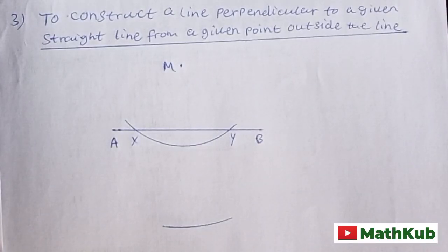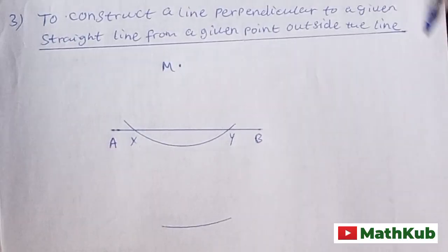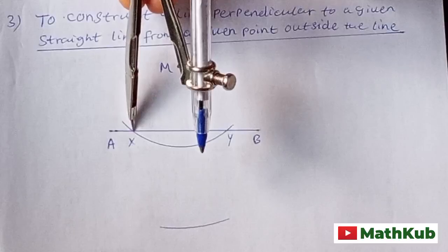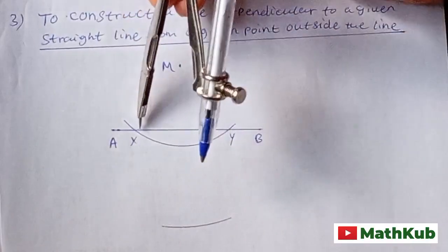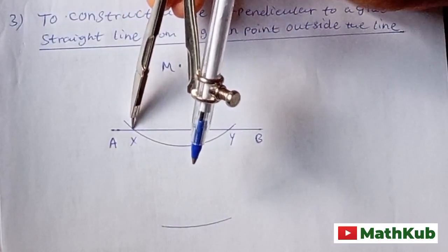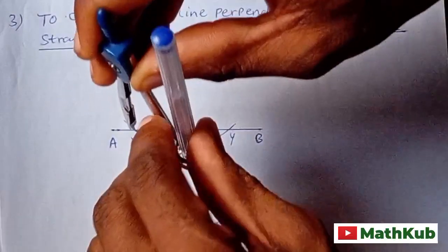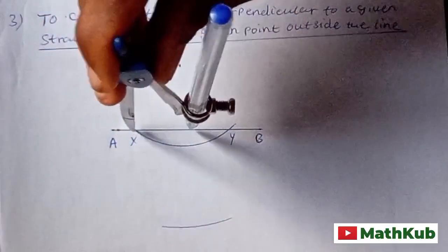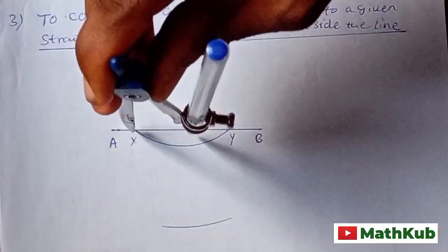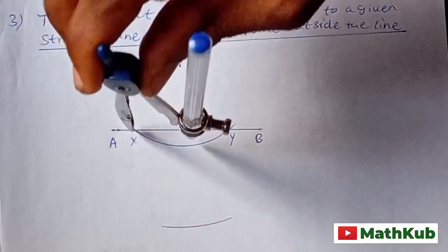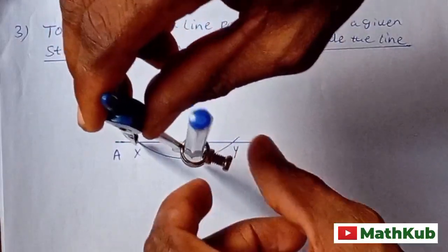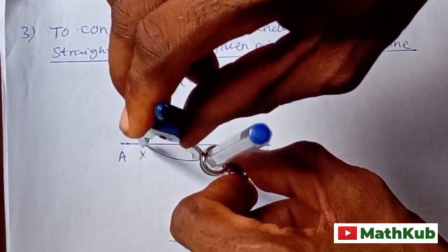Then with X and Y as centers, with center X and with a radius greater than half—look at this, this is like half of XY—but you make sure the radius is greater than half XY.